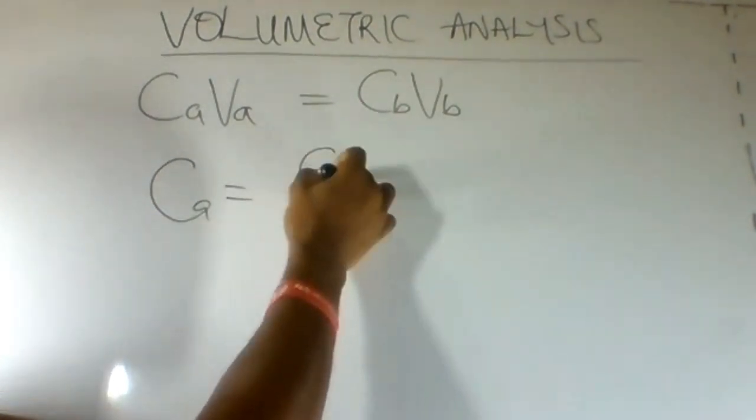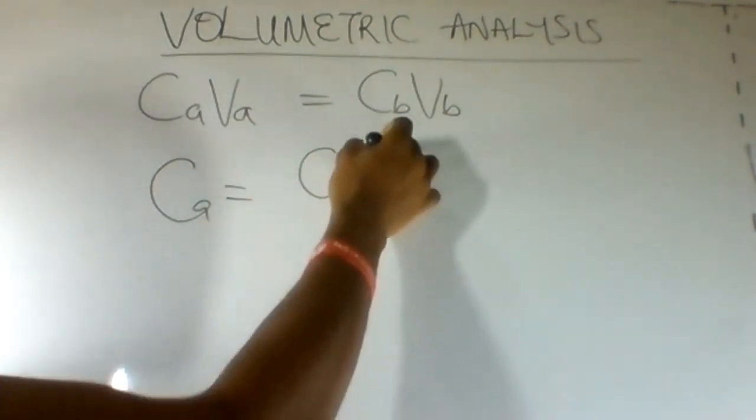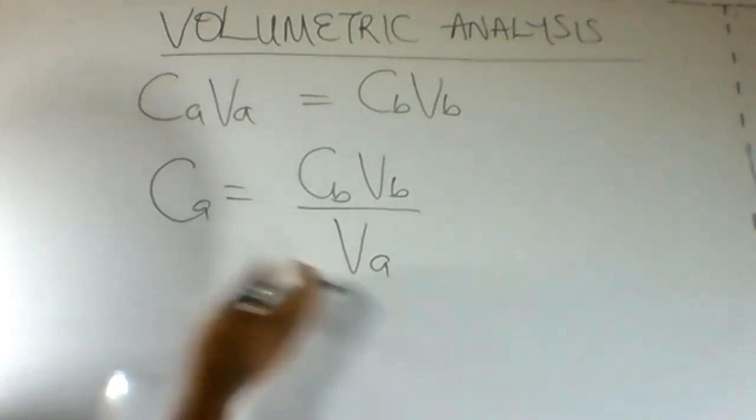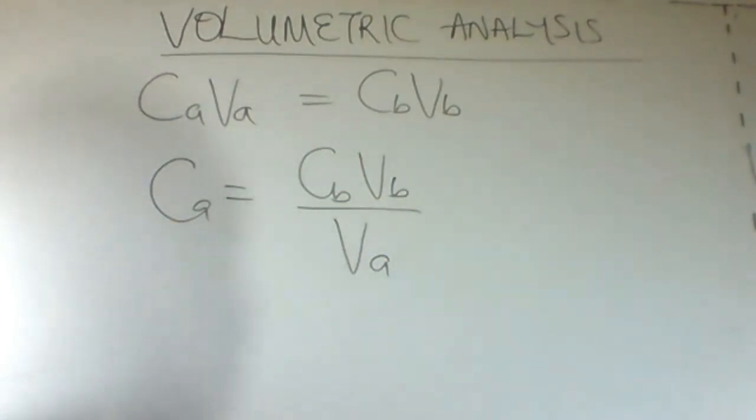Therefore concentration of base multiplied by volume of base divided by volume of acid will give us concentration of acid.